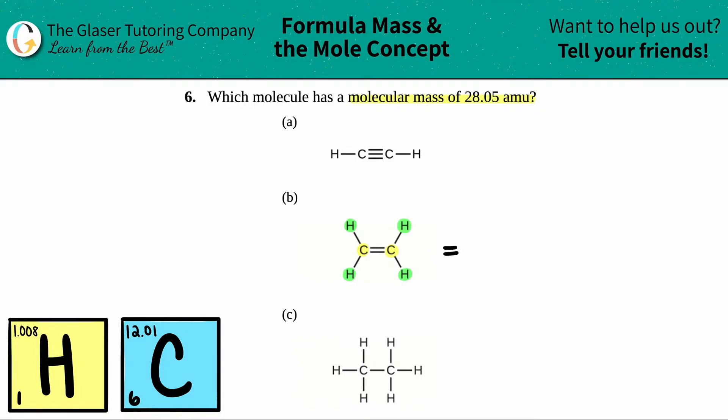So how many total carbons do we have? Yeah, I have two, right, so I have C2. And then how many total hydrogens? Yeah, I got four green circles, so I have four hydrogens. So this would be H4.